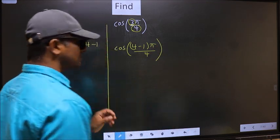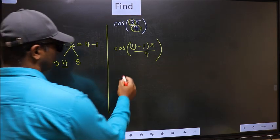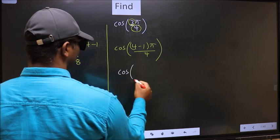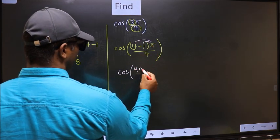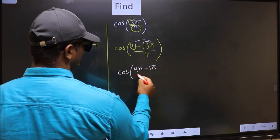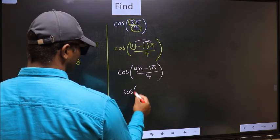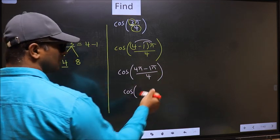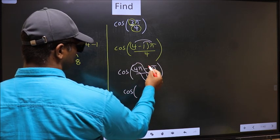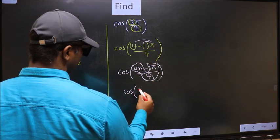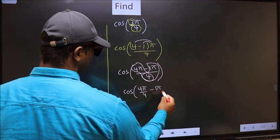This is your step 1. Next, cos. Now you should open up the brackets. You get 4π minus 1π by 4. Now cos, in this, you should split the denominator in this way. That is 4π/4 minus 1π/4.